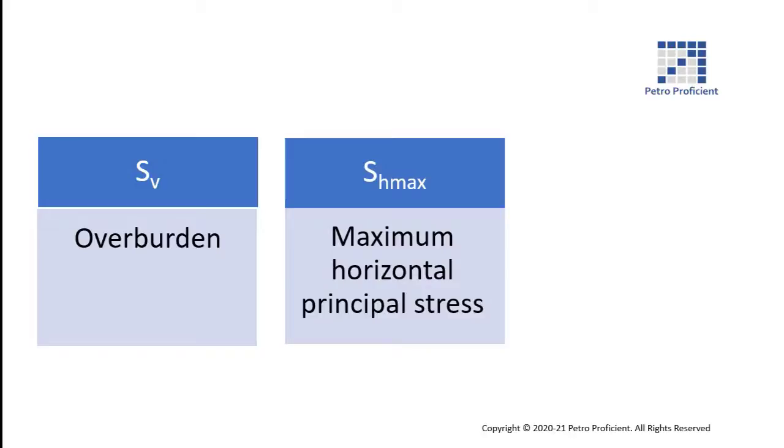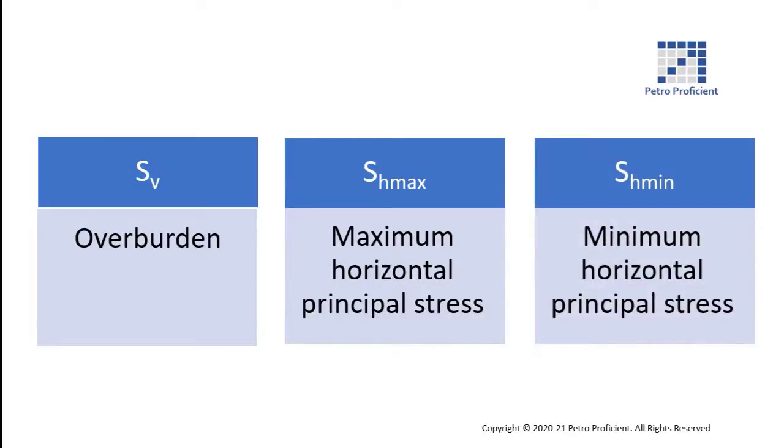SV is the vertical stress, also called overburden. SH maximum is the maximum horizontal principle stress. SH minimum is the minimum horizontal principle stress. SH minimum also represents the fracture gradient.